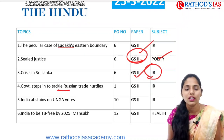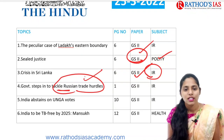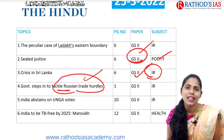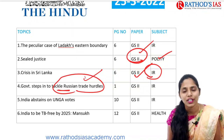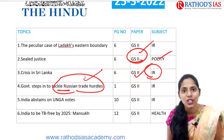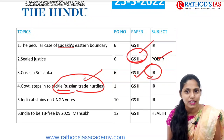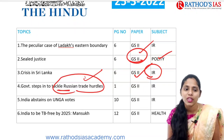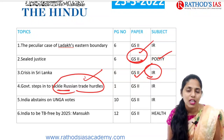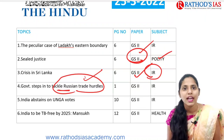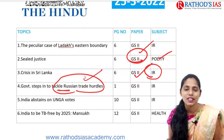The next topic is regarding government steps to tackle Russian trade hurdles — what steps India is taking regarding Russian trade, since Russia is exempted from SWIFT, causing payment issues between India and Russia. This falls under GS Paper 2. Next is India's abstention at the UNGA vote, also under GS Paper 2. Finally, there is a topic on TB, since yesterday was World TB Day, with a report released on TB in India — important from health under GS Paper 2 and science and technology.